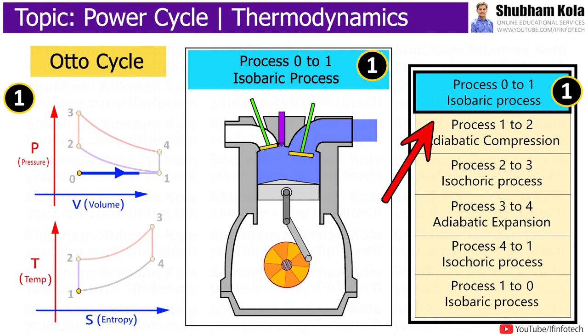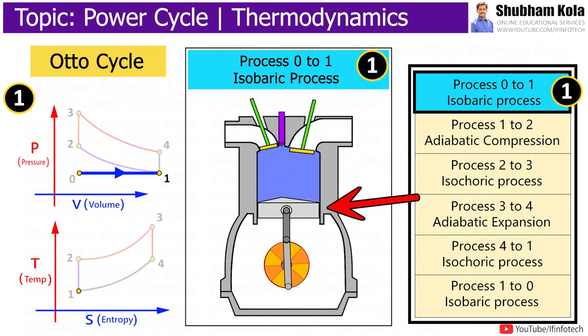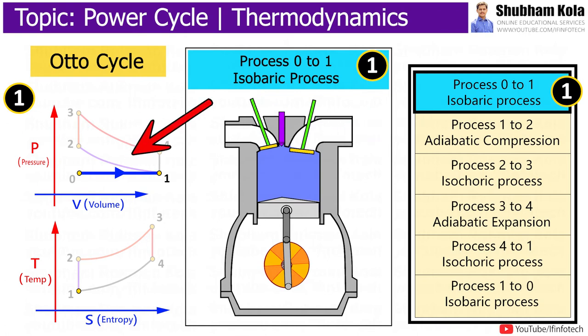Process 0 to 1 is an isobaric process, where the piston moves down to a low volume in the chamber so it can intake the air-fuel mixture at constant pressure.